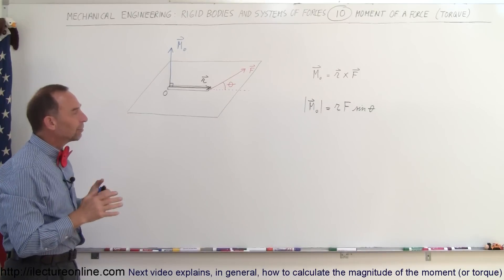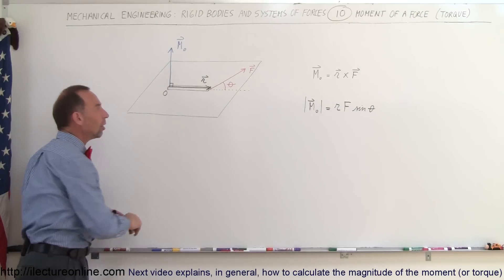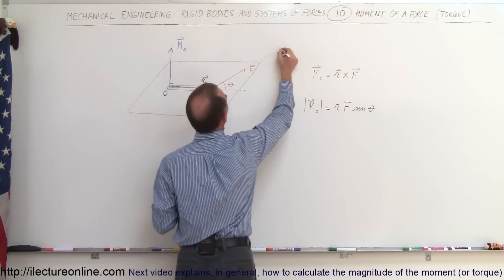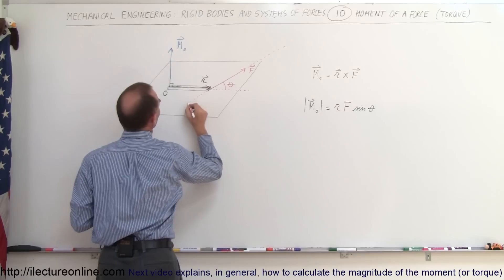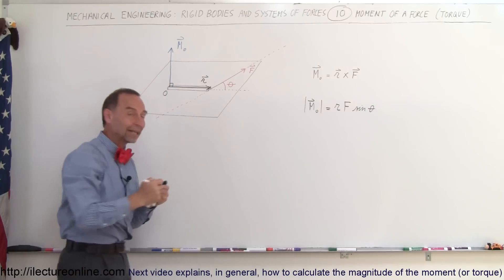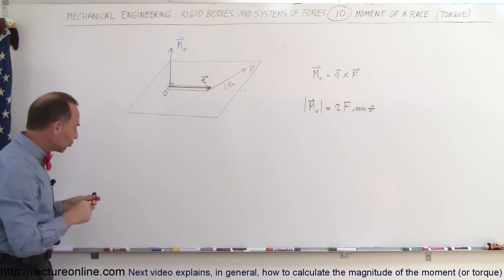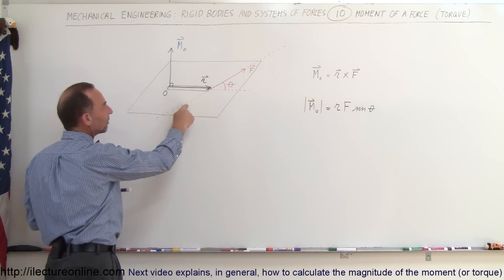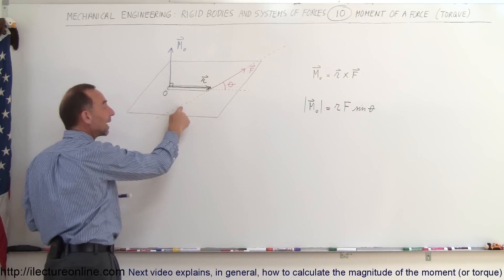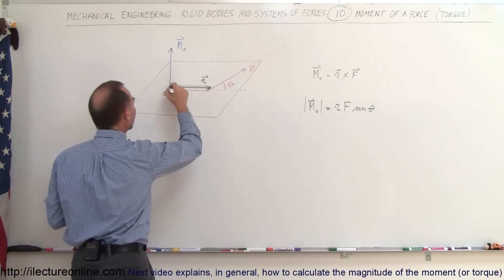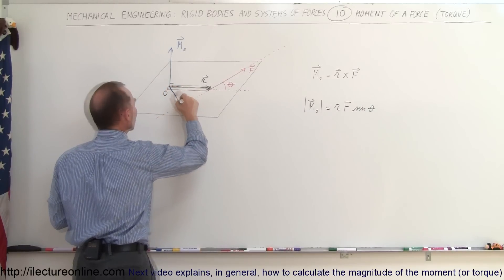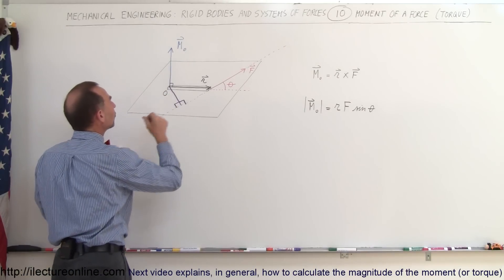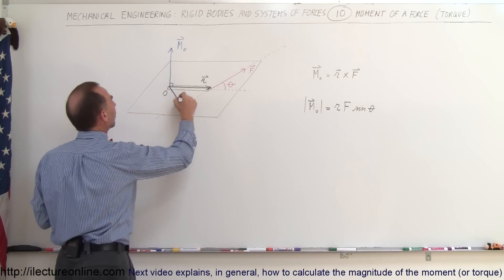Sometimes we also want to look at the moment in a different way. We draw what we call the line of action of the force — extending in both directions along the force's direction. Then we draw a line from the pivot point to the line of action of the force such that it meets the line of action perpendicularly, at 90 degrees. This is called the shortest distance from the pivot point to the line of action of the force, and we call that D.